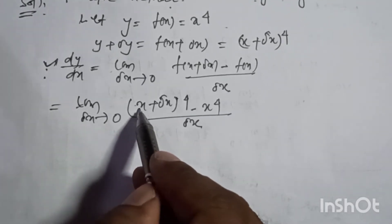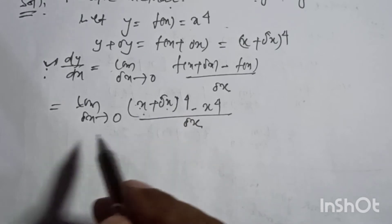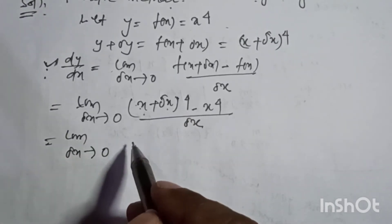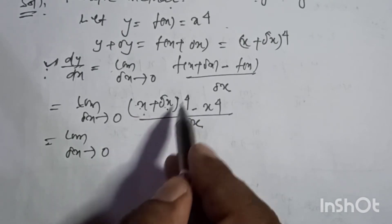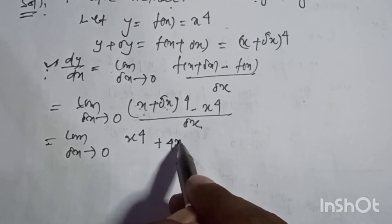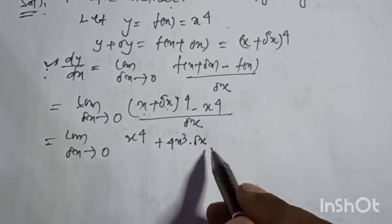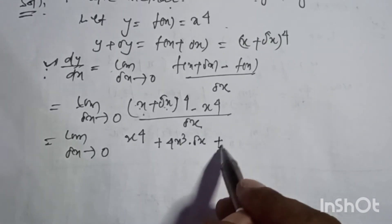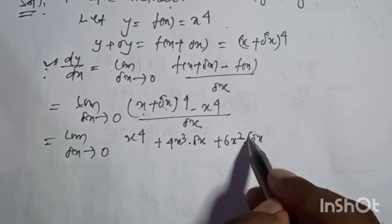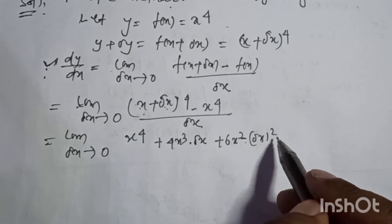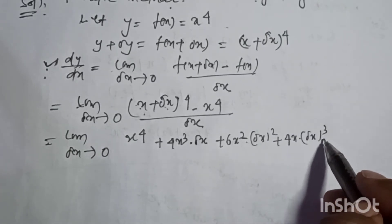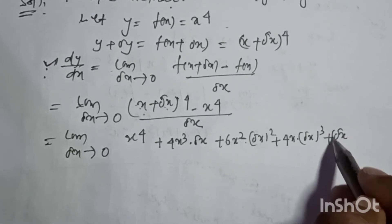In this case we apply the formula a plus b to the power 4. Limit del x tends to 0: x to the power 4 plus 4 x cube into del x plus 6 x square into del x square plus 4 x into del x cube plus del x to the power 4.